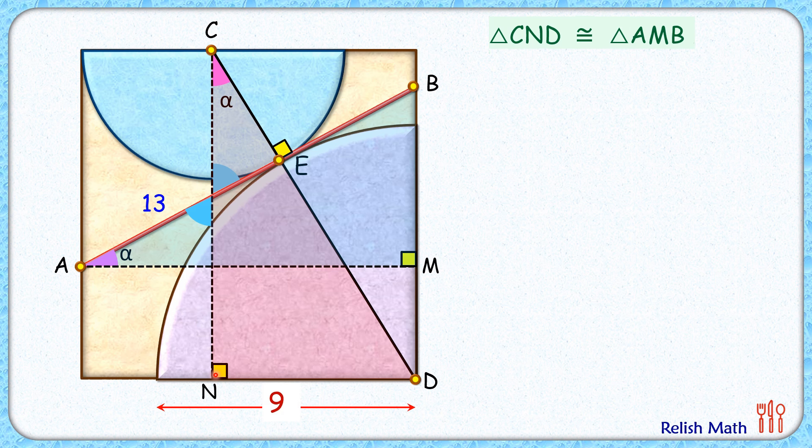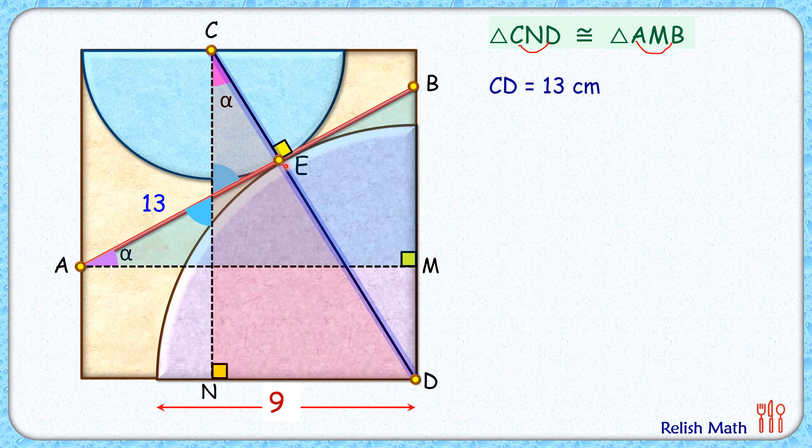So as the triangles are congruent, we can say that corresponding parts are equal, or we can say that the length CD equals length AB, or CD is 13 centimeters.